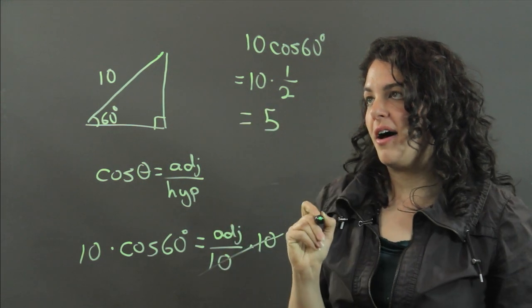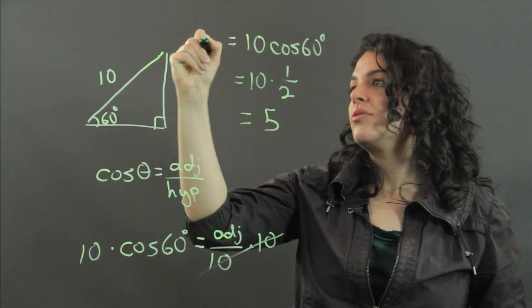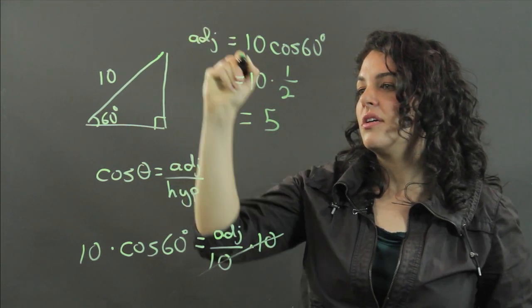And that equals 5. So our adjacent, this is equal to our adjacent here, is equal to 5.